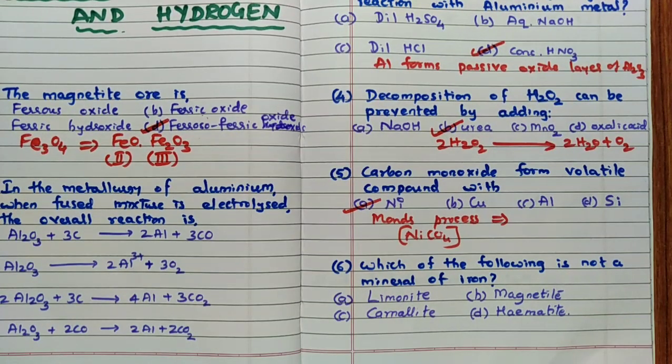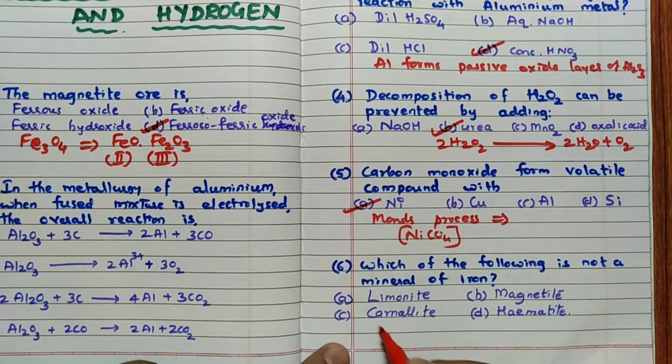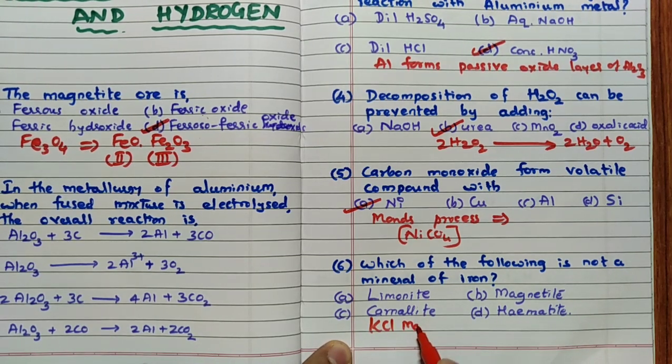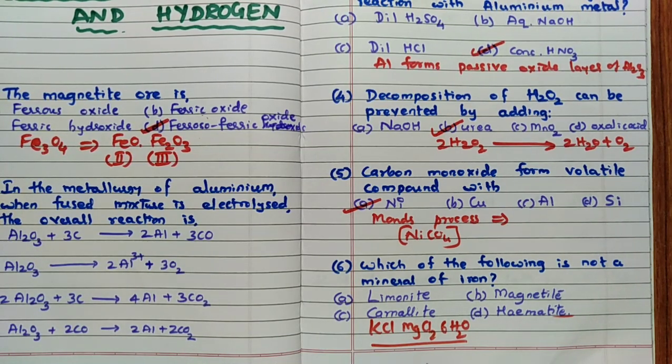Which of the following is not a mineral of iron? Remember limonite is a mineral of iron, Fe2O3·2H2O. Magnetite is a mineral of iron. Carnelite is remember formula is KCl·MgCl2·6H2O. So it is not having any iron. Hematite is Fe2O3. So the answer for this question is C. Such type of minerals and ore composition they can ask in the exam.